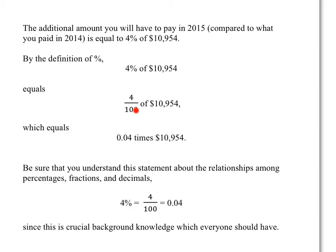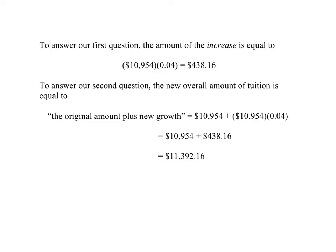So 4%, 4 one-hundredths, and 0.04 are all the same mathematical quantity. Please be sure that you are familiar with this or reacquaint yourself with it, because this is absolutely crucial background knowledge. To answer our first question, the amount of the increase — the number of extra dollars you pay next year — is 0.04 times $10,954, which equals $438.16. To answer the second question, the new tuition in 2015 equals the original amount plus the new growth: $10,954 plus $438.16, for a total of $11,392.16.